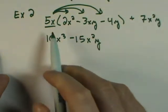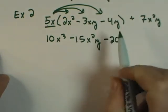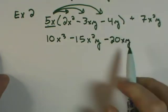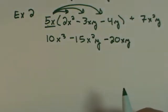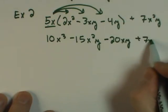With the last distribution, 5 times negative 4 is negative 20. There is no common base, so each of these variables will be rewritten as xy. We tend to write these in alphabetical order. Then I bring this last term down, which was a plus 7x squared y.